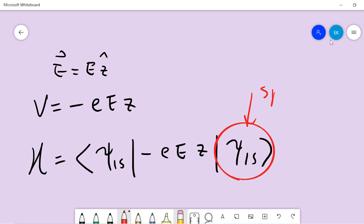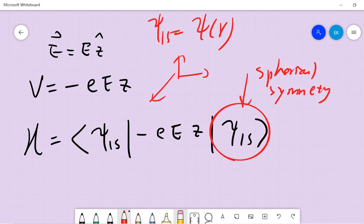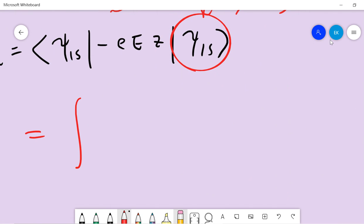So that means phi_1s is only a function of r, with no theta or phi dependence. If you write the system in spherical coordinates, when you do the integration...